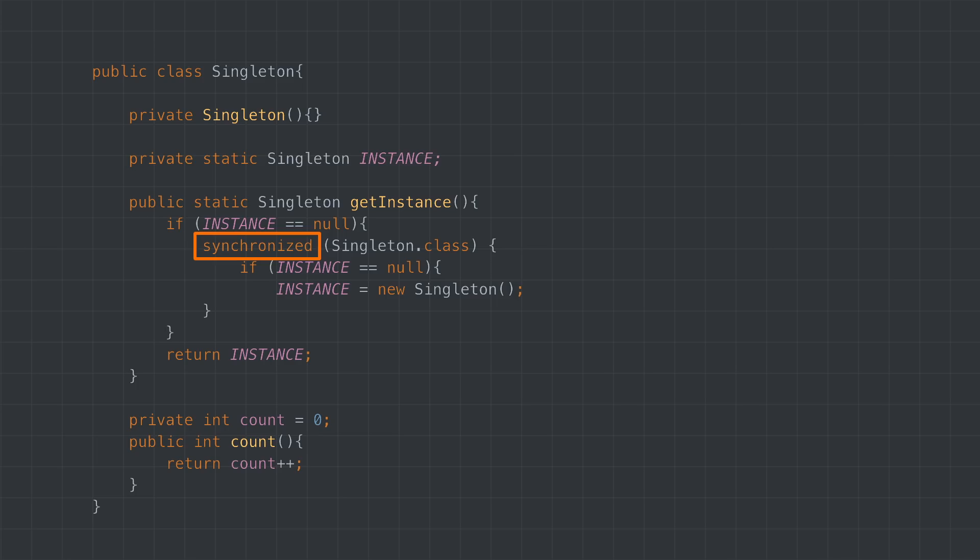Yet, this is not enough. The instance also needs to be marked volatile. The volatile keyword tells the compiler that this variable might be modified asynchronously by concurrent threads. All of this leads to a lot of boilerplate which you need to repeat each time you implement a singleton. But since this code is too complicated for such a simple task, enums are used for creating singletons in Java most of the time.